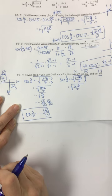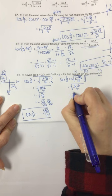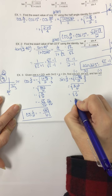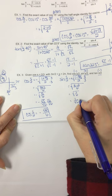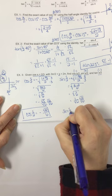We have the square root of 1/6. The square root of 1 is 1 over the square root of 6. Multiplying by square root of 6 over square root of 6, we get sine of s/2 equals square root of 6 over 6.